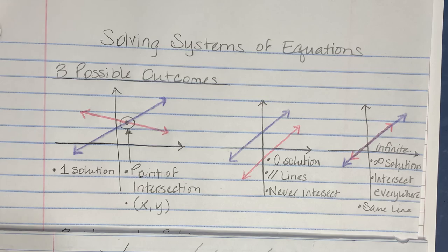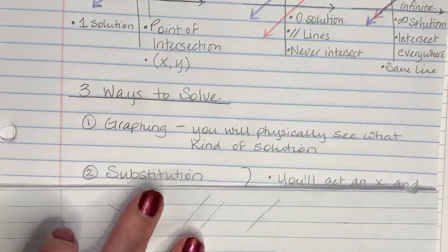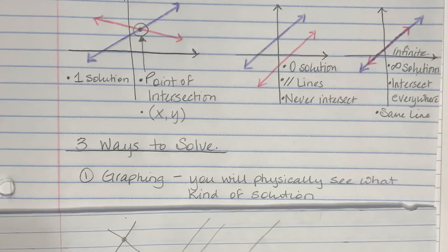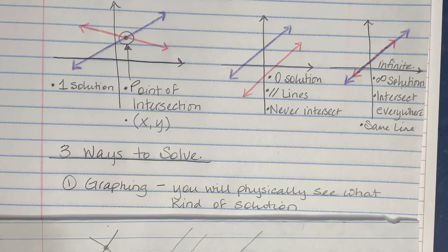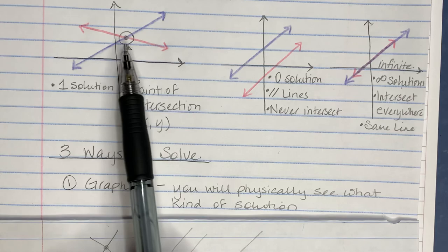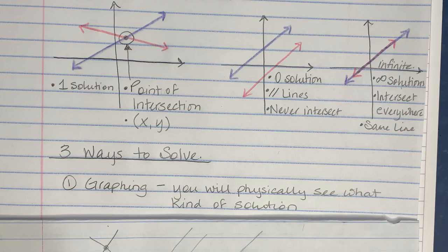What are the three types of solving we could use? Well, the first is graphing — you can graph and physically see what kind of solution you get. Can we always tell where the point of intersection is? Not always, especially if the answers are fractions, but that's when we use Desmos or graphing calculators to help identify where the solution is.